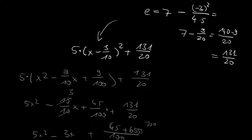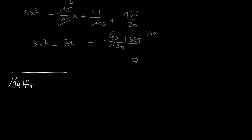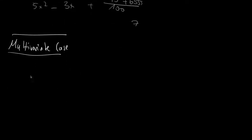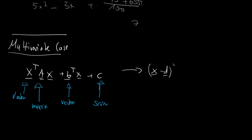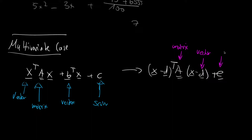With this in mind, let us continue to the multivariate case. The problem is given as x vector transposed A x, where x is a vector and capital A is a matrix, plus b transposed x where b is a vector, plus scalar c. We want to transform it into x minus d transposed A x minus d plus a new scalar e. We want to find the vector d, the matrix A, and the scalar e.